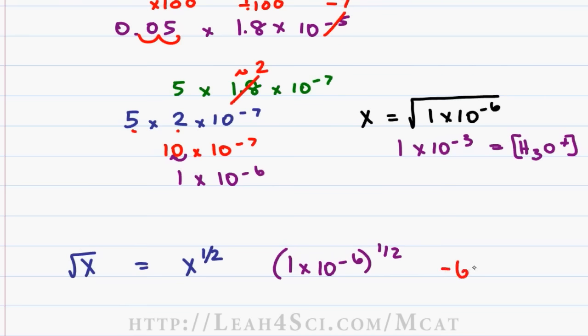So here we have negative 6 is our first exponent times 1 over 2 which is our second exponent. Negative 6 over 2 is negative 6 divided by 2 and that once again gives us negative 3 which is our answer 1 times 10 to the minus 3.